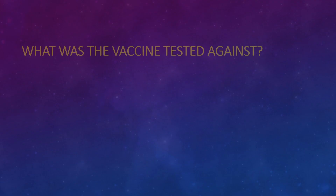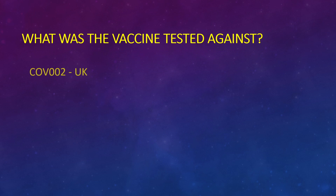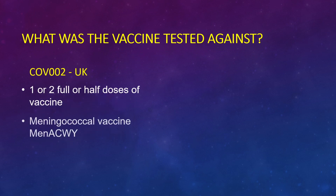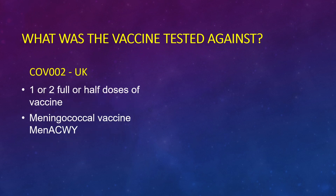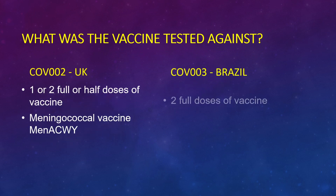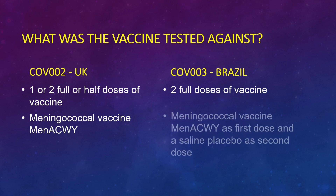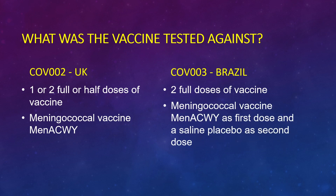The UK trial used one or two full or half doses of vaccine trialed against the meningococcal vaccine, whereas the Brazil trial used two full doses of the vaccine and used the meningococcal vaccine as the first dose.